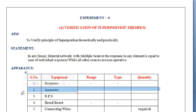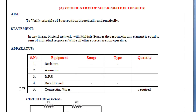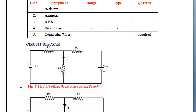With the help of these apparatus, we are going to verify superposition theorem. This is the circuit diagram — here we have three resistors R1, R2, R3 and multiple sources, nothing but V1 and V2. We have taken two voltage sources, V1 and V2. This diagram shows both voltage sources acting, that is V1 and V2 are acting in the circuit.